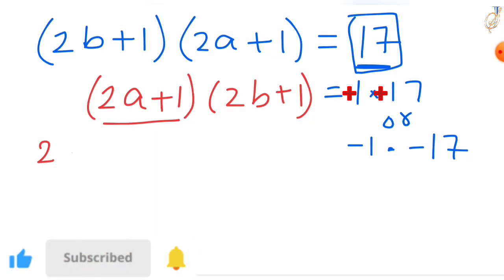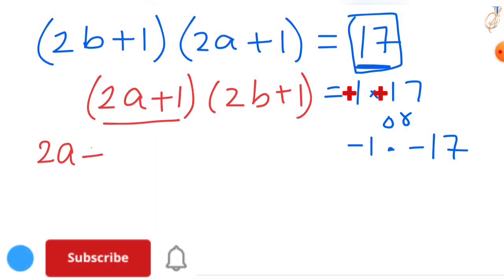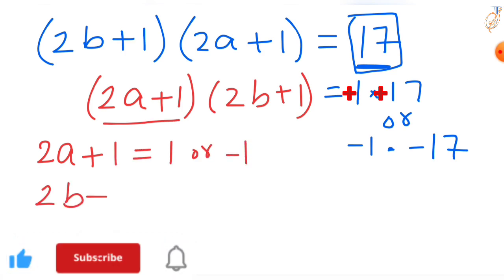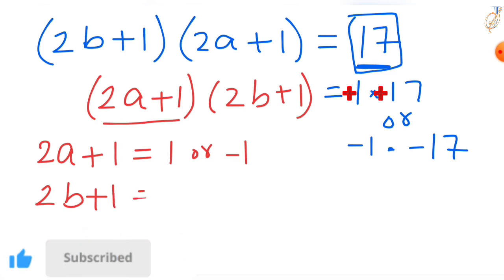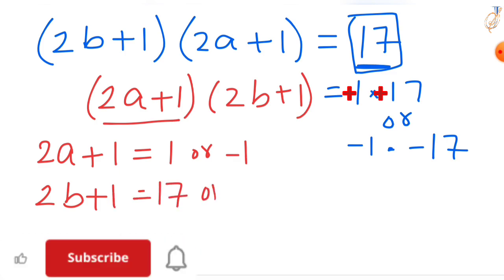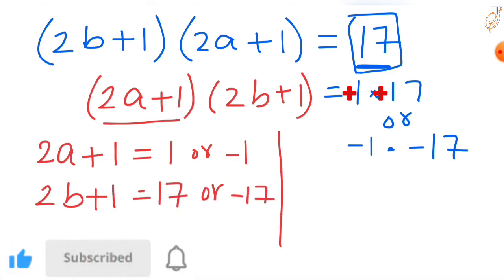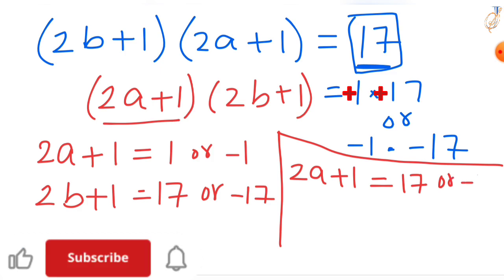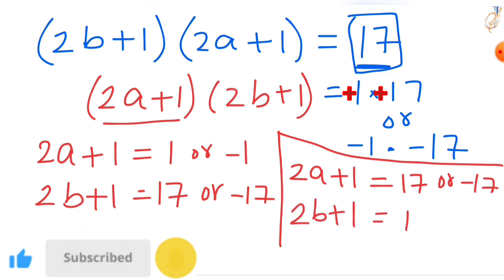So we set up the cases: either (2a + 1) = 1 and (2b + 1) = 17, or (2a + 1) = −1 and (2b + 1) = −17. Similarly, (2a + 1) = 17 and (2b + 1) = 1, or (2a + 1) = −17 and (2b + 1) = −1.